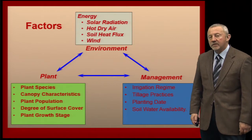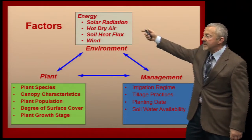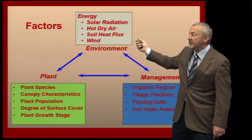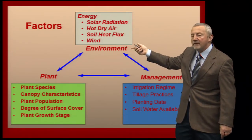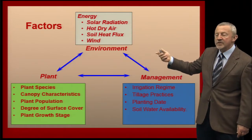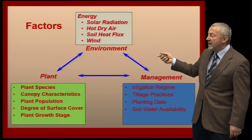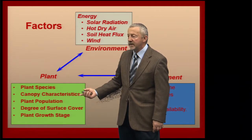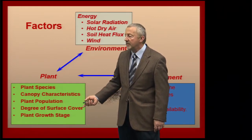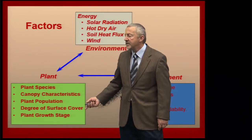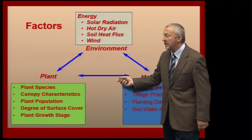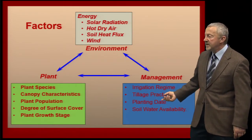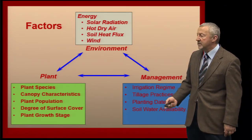As we look at the factors that impact crop water use in general, there are many factors. Some involve the environment — incoming solar radiation, solar heat flux, and wind. These are all environmental factors that contribute to bringing energy into the system from the sun. We'll also talk about plant species and canopy characteristics in terms of the leaf area index, plant stage of growth impact on crop water use, and lastly, the irrigation regime, tillage practices, and planting date — how that might affect crop water use as we go through the growing season.